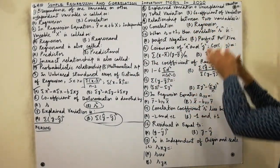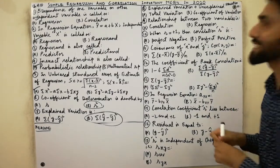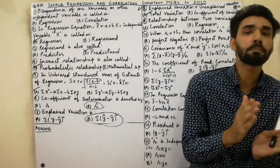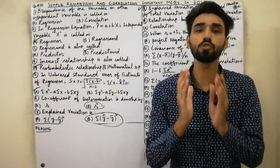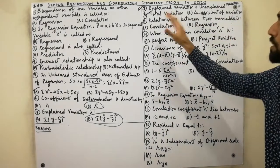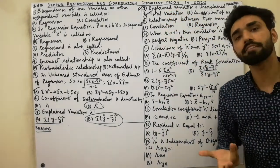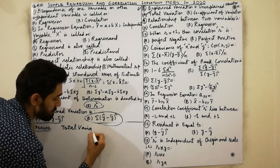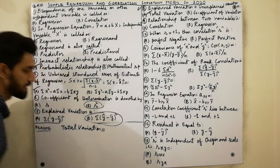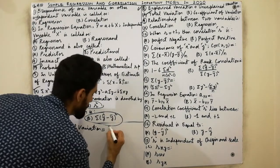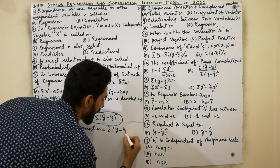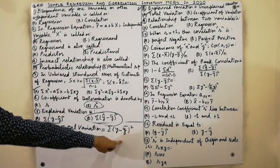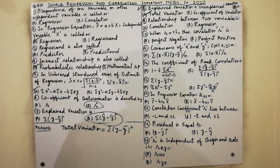MCQ 8: explained variation plus unexplained variation always equals total variation. Total variation is Σ(Y − Ȳ)². Must remember: total variation = Σ(Y − Ȳ)², and explained + unexplained = total variation.